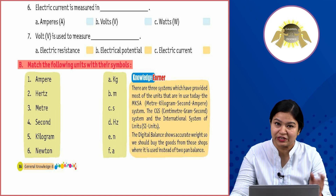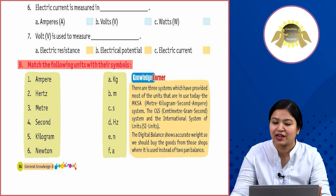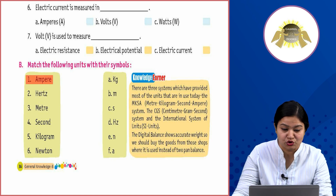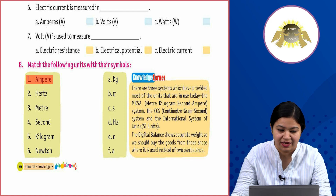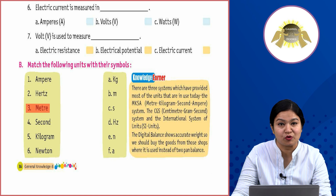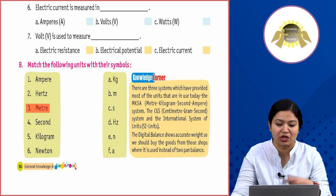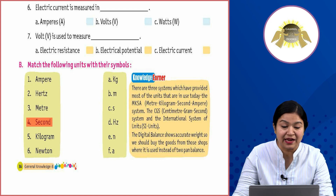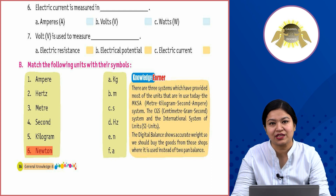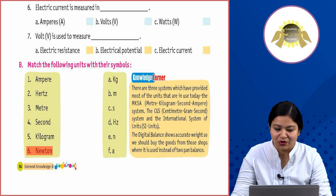Now B part: Match the following units with their symbols. Ampere ka short mein symbol hota hai A. Hertz ka symbol hota hai Hz. Meter ka symbol hota hai m. Second ka symbol hota hai s. Kilogram ka short form hota hai kg. Newton ka symbol hota hai N.